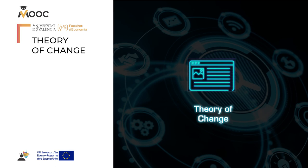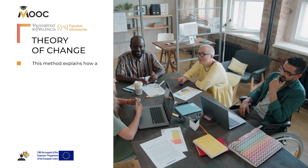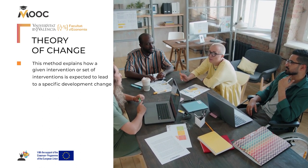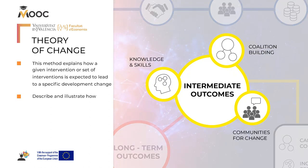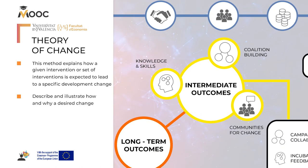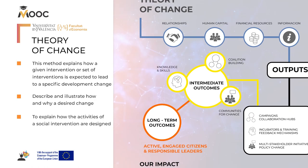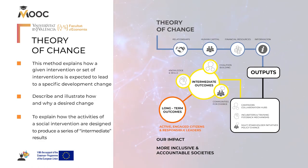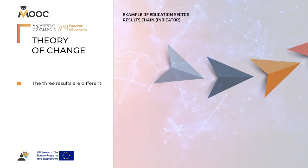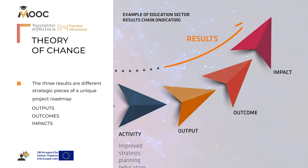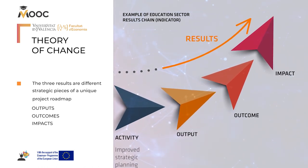To continue, we will address the theory of change. This method explains how a given intervention, or set of interventions, is expected to lead to a specific development change. It helps to describe and illustrate how and why a desired change is expected to happen in a given context. It aims to explain how the activities of a social intervention are designed to produce a series of intermediate results that contribute to achieving the final intended impacts. The theory of change states that the term results is used to include outputs, outcomes, and impacts, where impacts are the final outcomes affecting well-being.